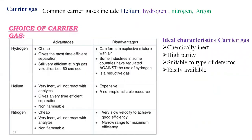The common carrier gases include helium, hydrogen, nitrogen, and argon. The most commonly used carrier gases are helium, hydrogen, and nitrogen. Among these, we most commonly use helium and nitrogen because they are less expensive. The choice of carrier gas depends on its advantages and disadvantages relative to the application.